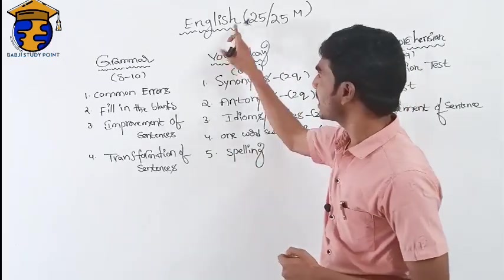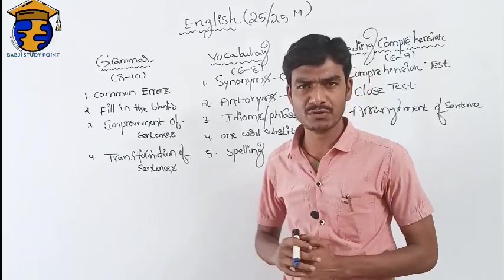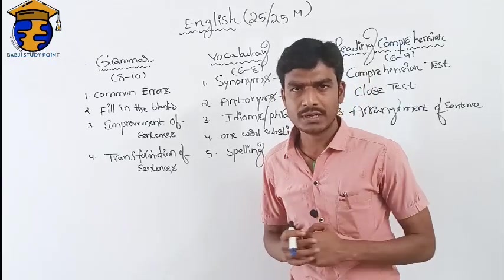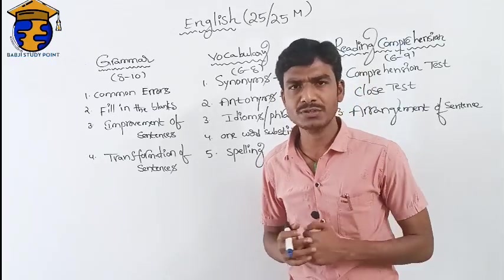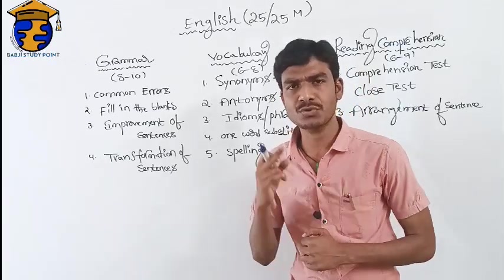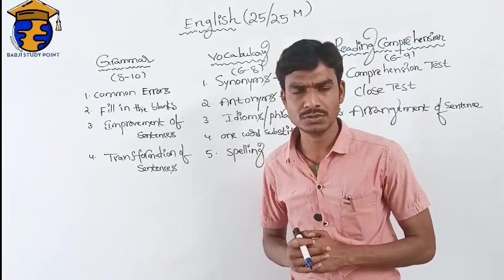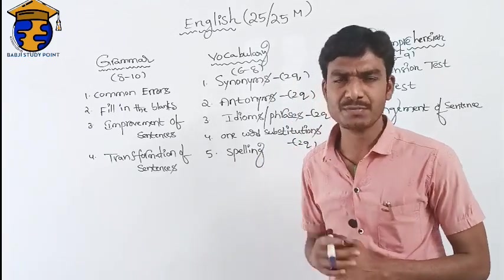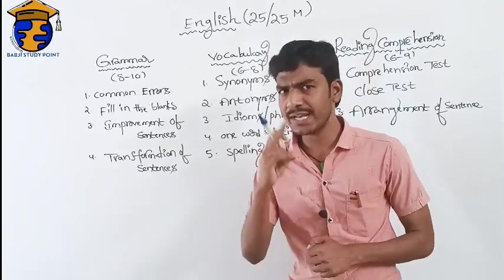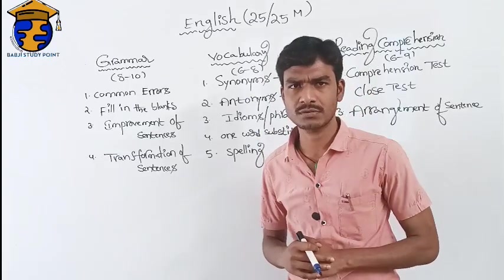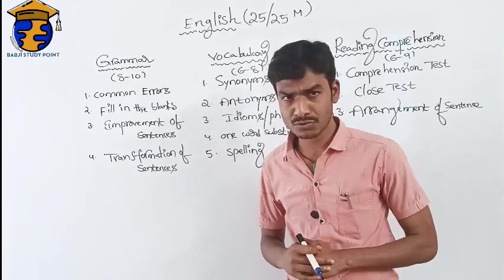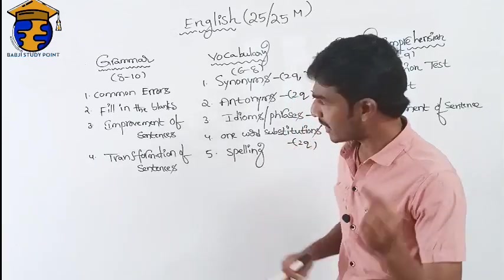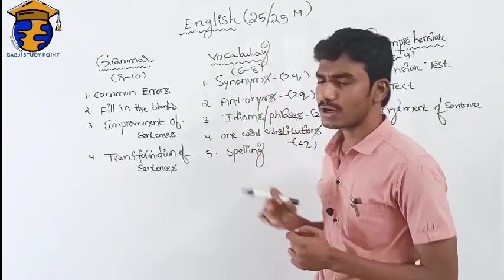In English, we have 25 questions. Each question carries 3 marks. So 25 into 3 equals 75 marks. And there are negative marks — each question carries one negative mark.